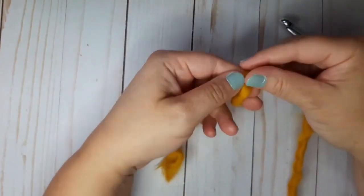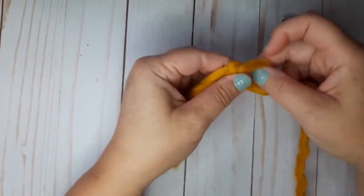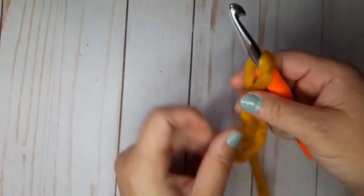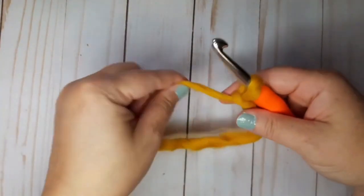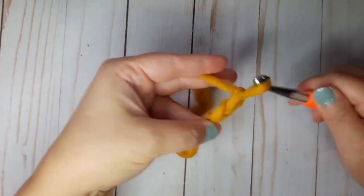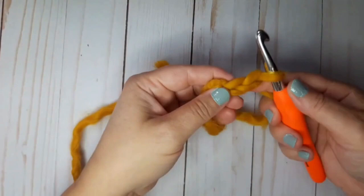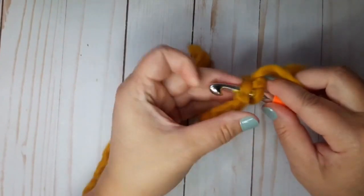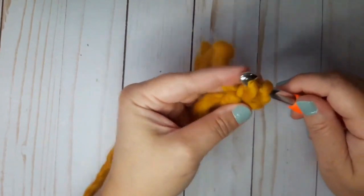To make the second magic ring, you're going to make a slipknot, place your crochet hook in, and chain two. Now we're going to work back into the first stitch.